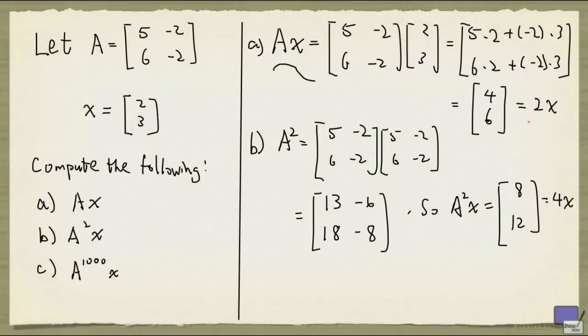The fact that A times x is 2 times x means if you multiply both sides again by A, you get A squared equals 2 times A x, which again gives you 2 times 2 times x, right? Because A times x is 2 times x.